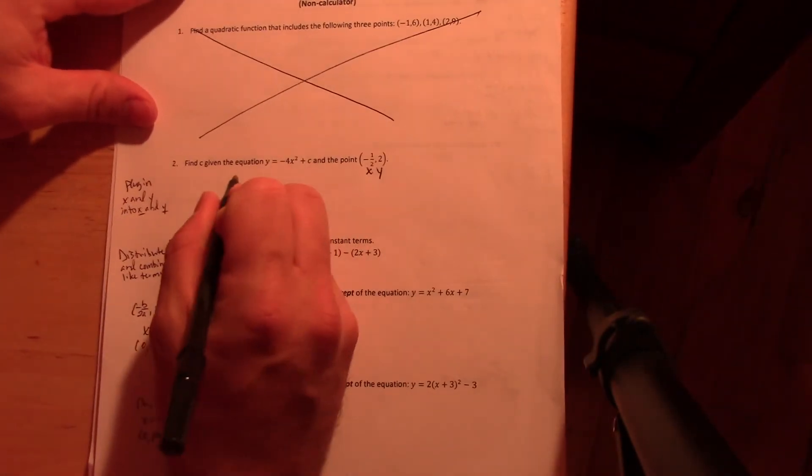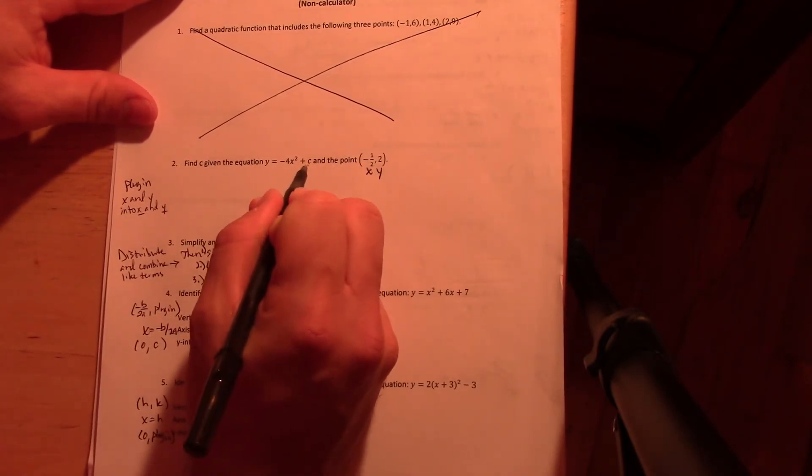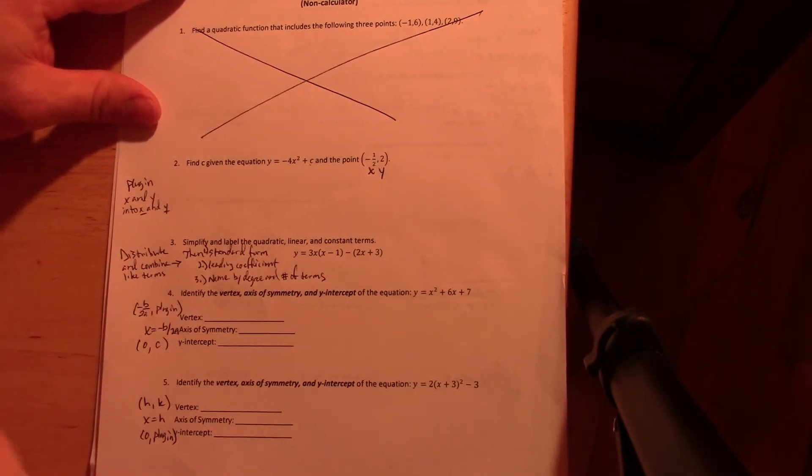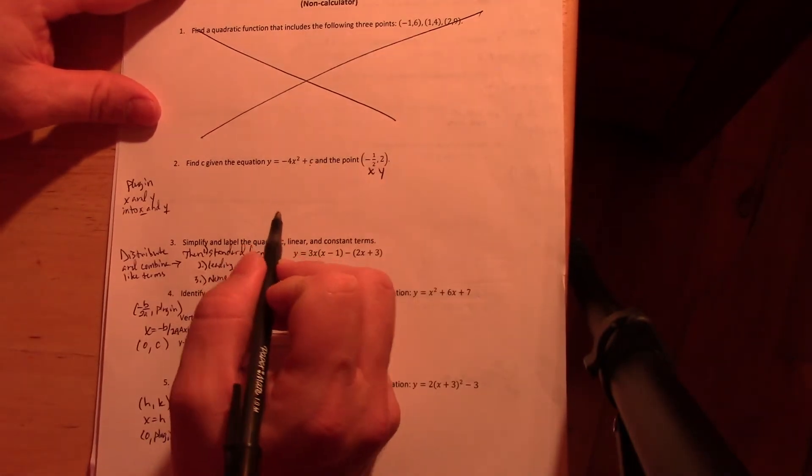Back to the first page. What you're going to see here is on number two, we need to find the variable. There's going to be two separate types of problems like this on the test, which you'll see again on the next review. There's another one where we have to find, I believe, A.